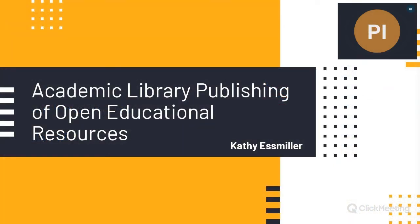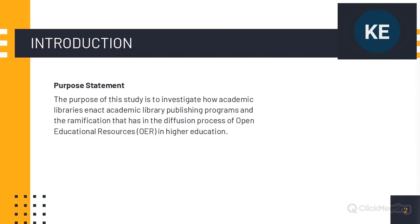Good afternoon. My name is Kathy Essmiller. I'm the OER librarian at Oklahoma State University in the US, and this was my dissertation proposal on academic library publishing of open educational resources. The purpose statement: academic libraries are among the institutions and organizations publishing OER. I defined an academic library as a library intentionally aligned with a specific institution of higher education. My dissertation will investigate academic library publication of OER, and it's specifically concerned with the ramification that academic library publishing of OER has on the diffusion process of OER in higher education.